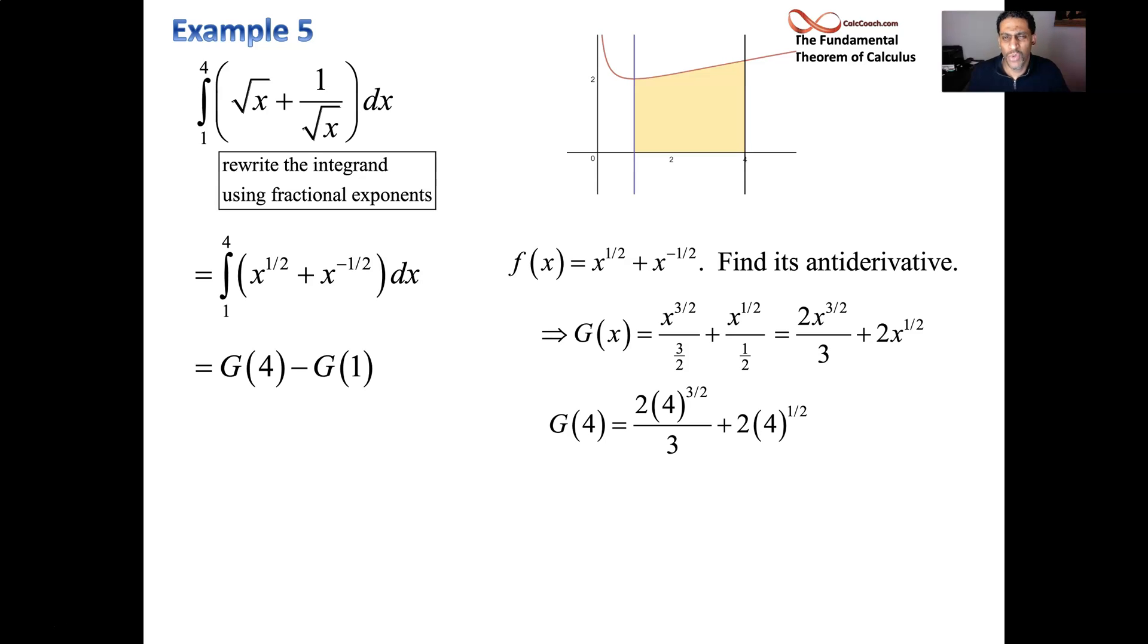So let's plug the 4 in. What is 4 to the 3 halves? Well, it's 4 to the 1 half. It's a perfect square. So that's square root of 4, which is 2. And then you cube it. So 4 to the 3 halves is 2 cubed. It's an 8. So you got 16 over 3. And then for the second part, that's just the square root of 4 there. So that's 2 times 2. 16 over 3 plus 4. Leave it like that. You don't have to go ahead and put those together. We're going to find that when we plug a 1 in, we're going to also have something over 3. And so we could combine them when it's time to do our subtraction. Don't think you have to get a nice simplified answer. We don't have to simplify these. We can leave them like this.